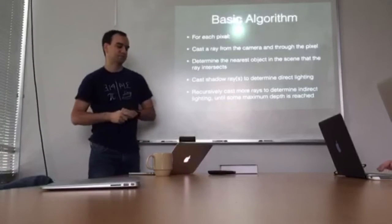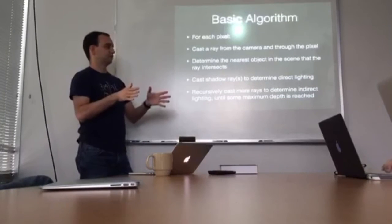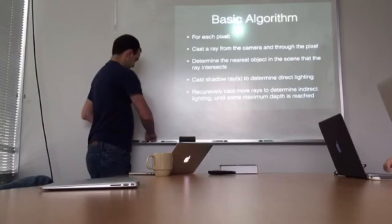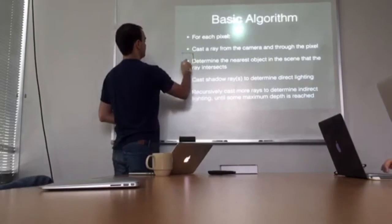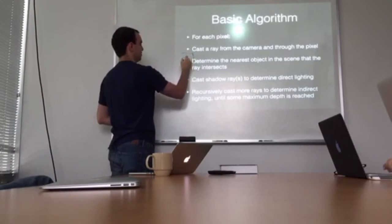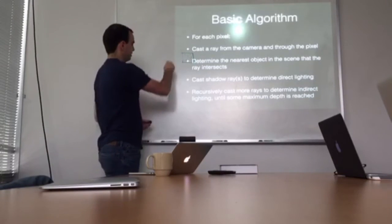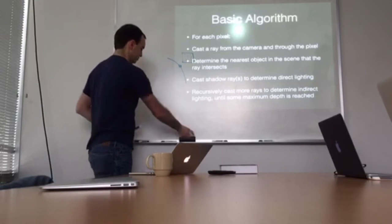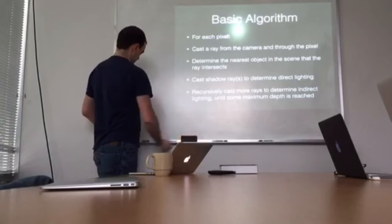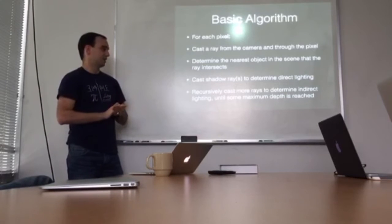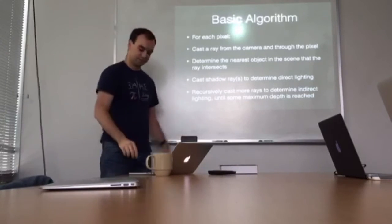To recap the basic algorithm: for each pixel in the image, you cast a ray from the camera through the pixel, and you actually sub-sample that pixel — shooting multiple rays at different points within it. If this is one pixel, you might shoot a ray through the middle and a few other spots. That gives you nice anti-aliasing. If a sphere's edge falls on your pixel, you'll get some color of the sphere and also whatever's behind it. Then for each ray you determine which object it hits, do shadow rays for direct lighting, and recursive rays for indirect lighting.